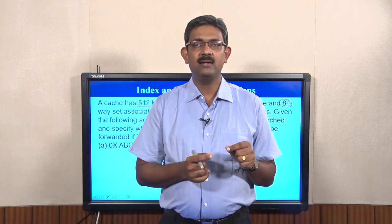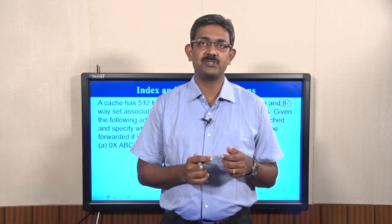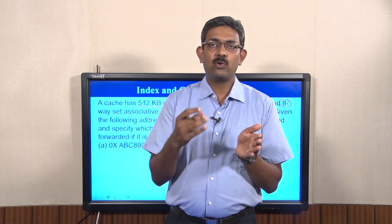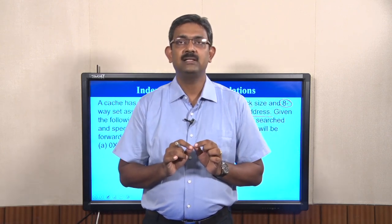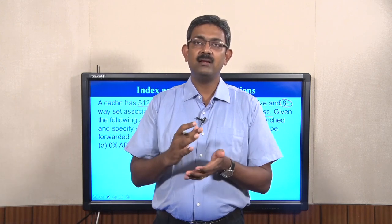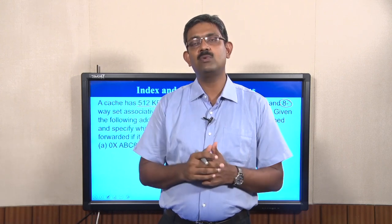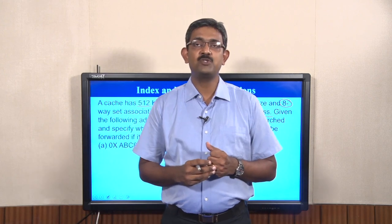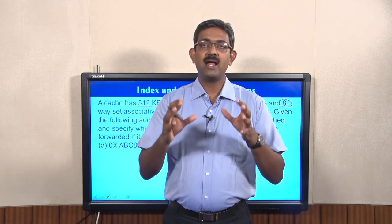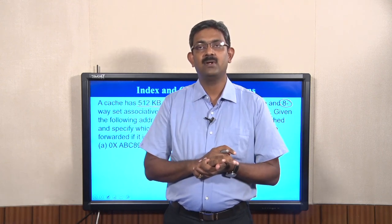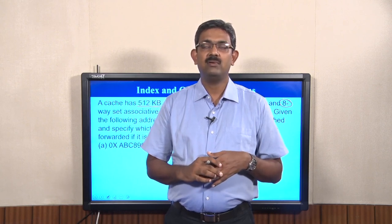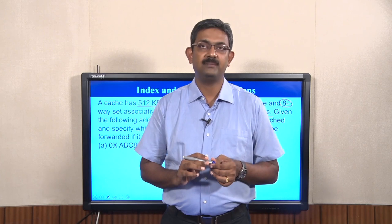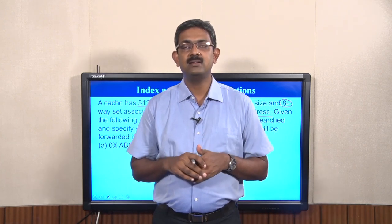We are not searching the entire cache. The index bits of the physical address tell us which set to search for a tag match. If there is a hit, the offset tells us which word to transfer. First, we determine the address split: tag, index, and offset. The index identifies the set, and upon a tag match, the offset identifies the word.